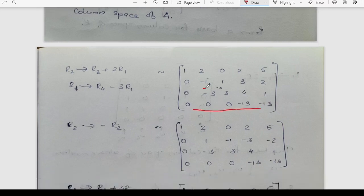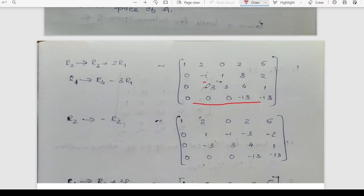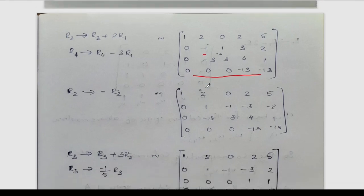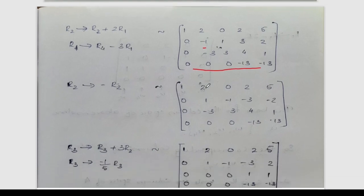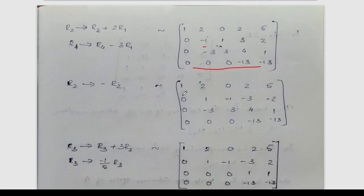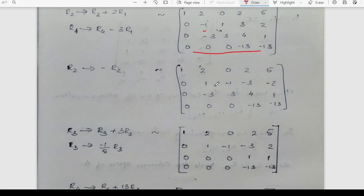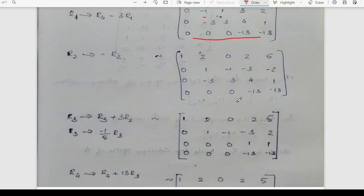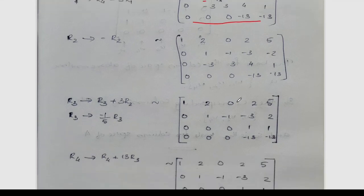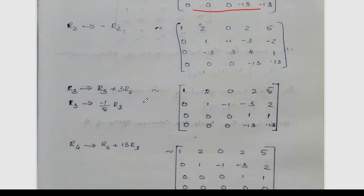R2 becomes R2 minus 1. After reduction: first row 1, 2, 0, 2, 5; second row 0, 1, -1, -3, -2; third row 0, -3, 3, 4, 1; fourth row 0, 0, 0, -13, -13. Then R3 becomes R3 plus 3R2, and R3 is multiplied by -1/5.